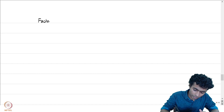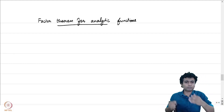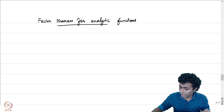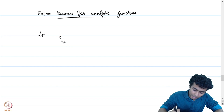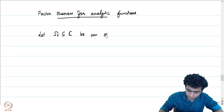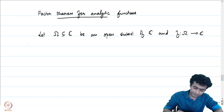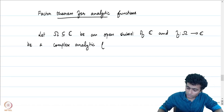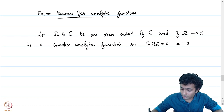This corollary is called the factor theorem for analytic functions. Complex analytic functions and holomorphic functions are the same, and I will start using them interchangeably. Let omega be an open subset of the complex plane and f from omega to C be a complex analytic function — a holomorphic function — such that f of z0 is equal to 0; it vanishes at a point z0 in omega.